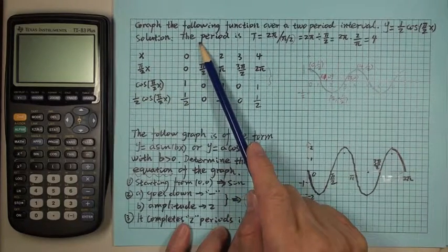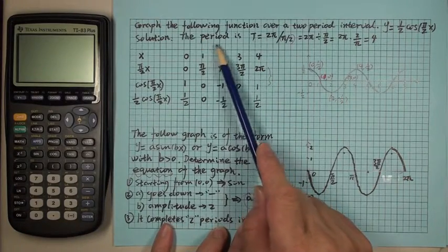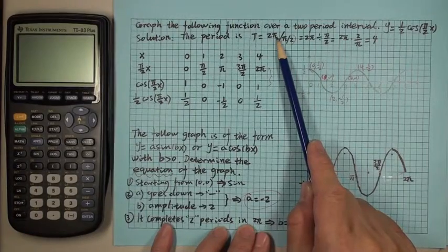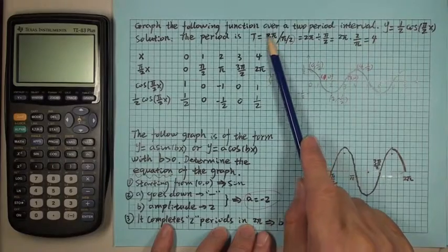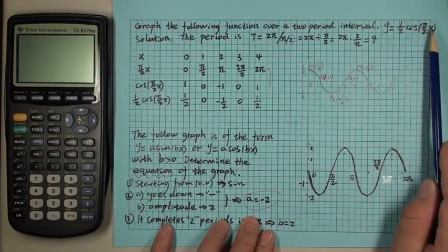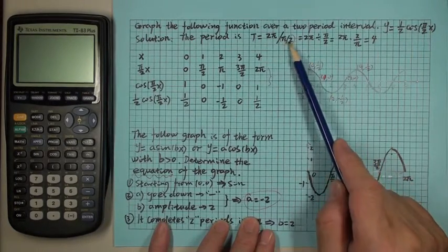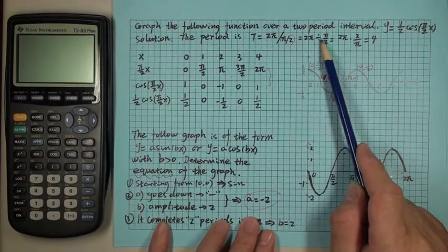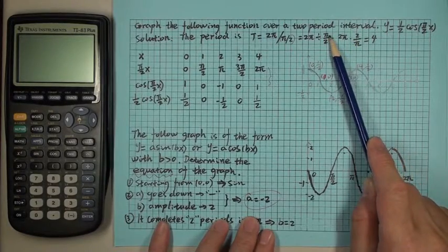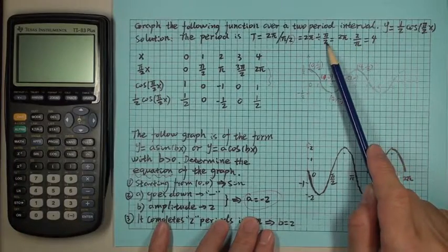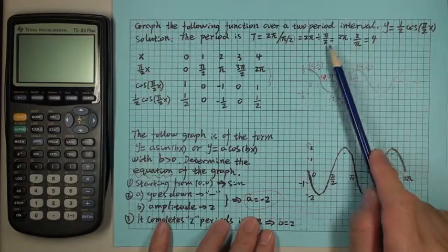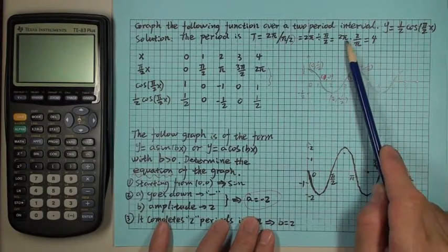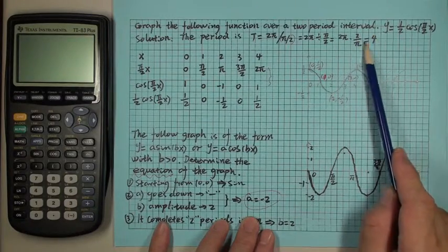The first thing we need to do is find the period. The period is always denoted by T, which equals two pi. Two pi is always the numerator, and the denominator is always the coefficient of x. So two pi divided by pi over two — you change the division into multiplication by flipping numerator and denominator. Pi and pi cancel, and two times two is four. So the period is four.